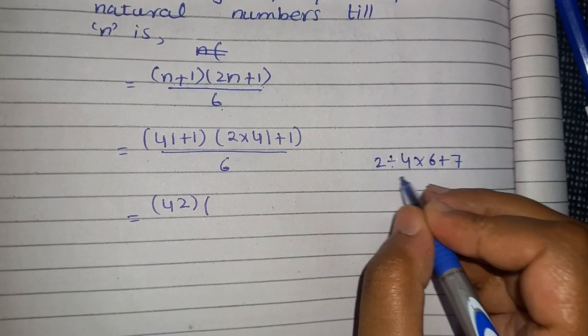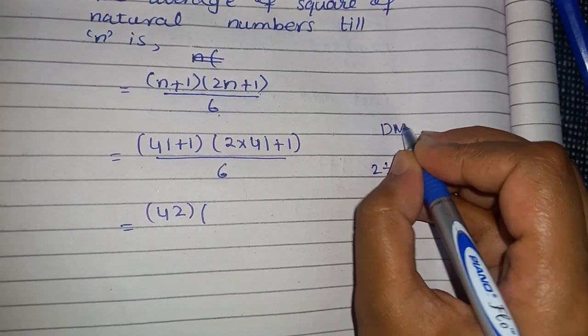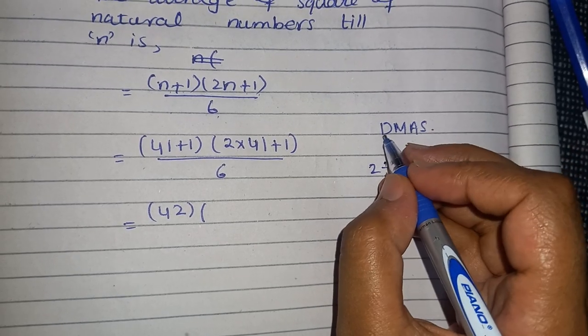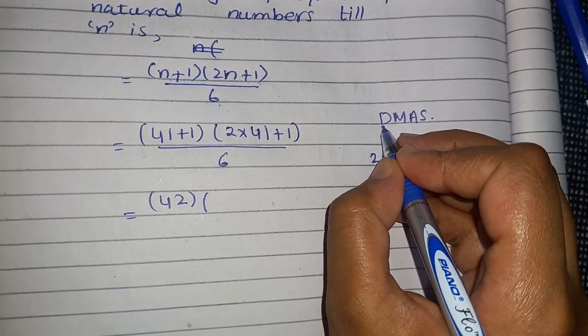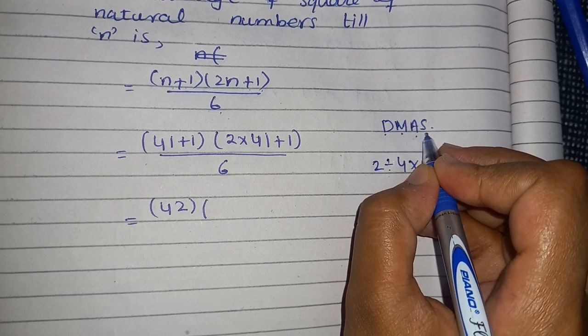So students, for solving these kind of expressions, you have a DMAS rule. First of all, you have to do the division, then multiplication, then addition and then subtraction.